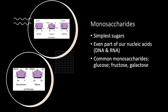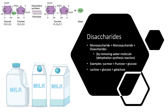Moving on to disaccharides — the prefix di means two, so a disaccharide is two monosaccharides joined together. This is usually done by removing a water molecule, through a process called a dehydration synthesis reaction, which is how you form a polymer.